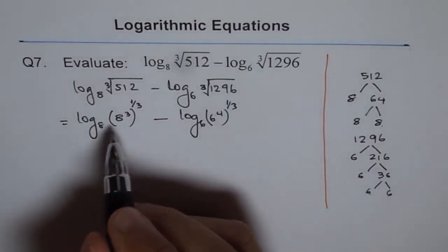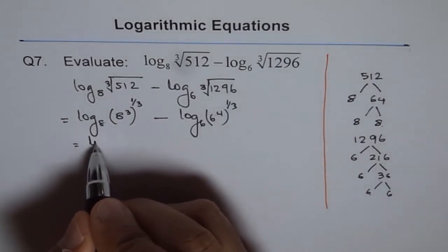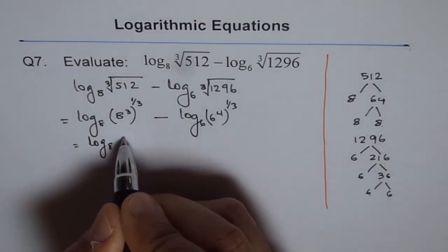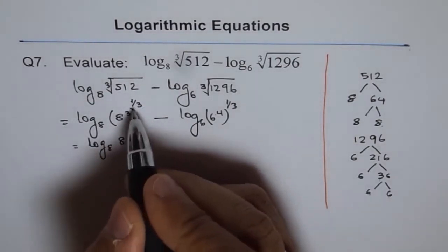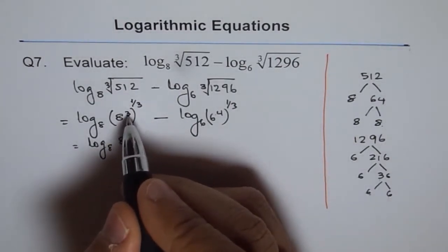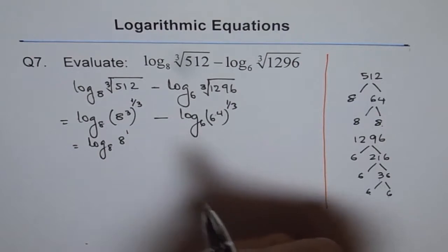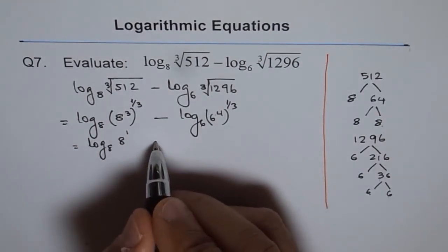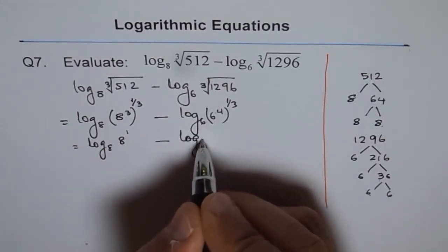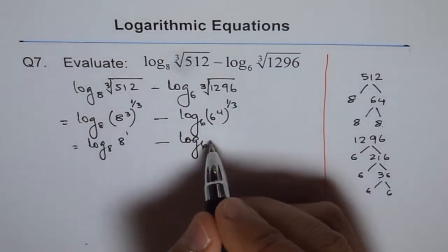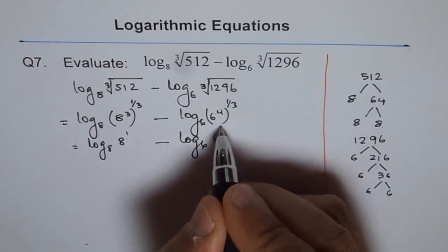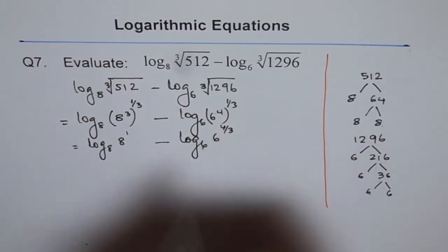Now this could be written as log base 8 of 8 to the power of—when you multiply 1/3 by 3, you get just 1. And this is log base 6 of 6 to the power of 4/3. That is what you get.